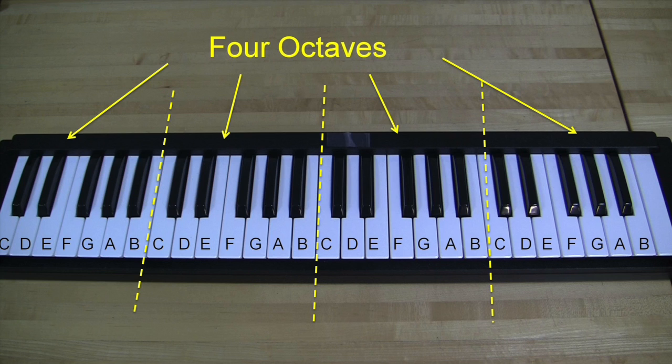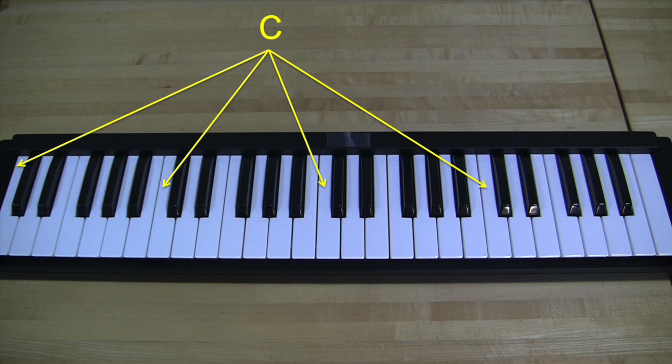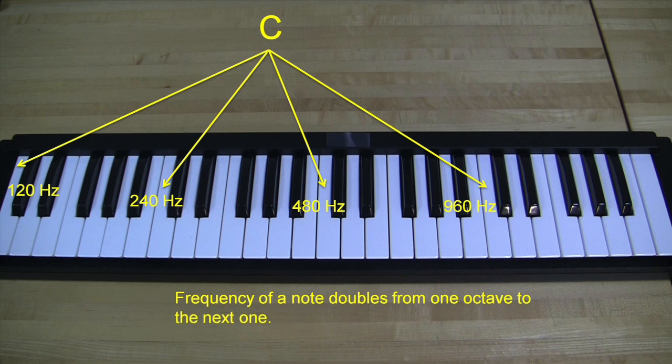For example, there are four C's on the keyboard. The leftmost C when played has a frequency of 120Hz. The second C has a frequency of 240Hz and so on. Thus, you can see that the frequency doubles as you jump an octave.